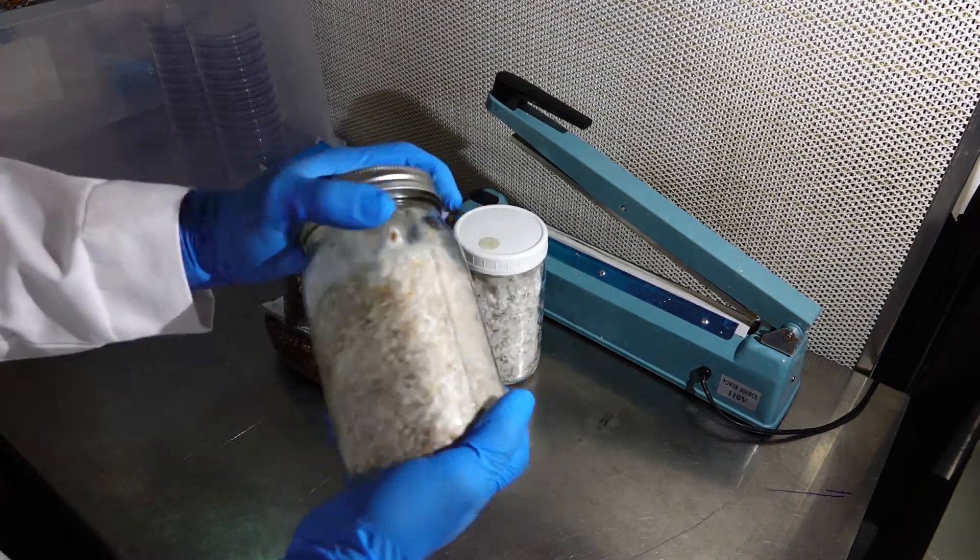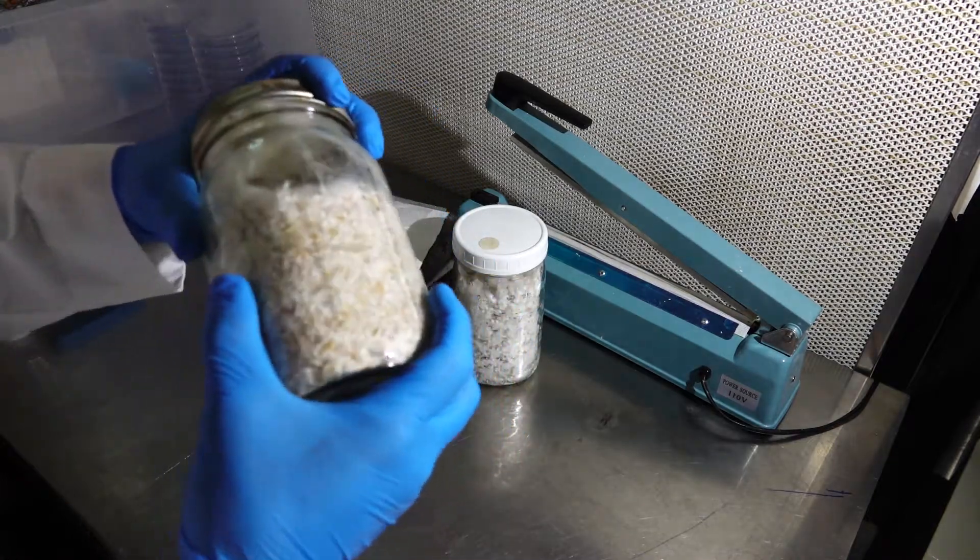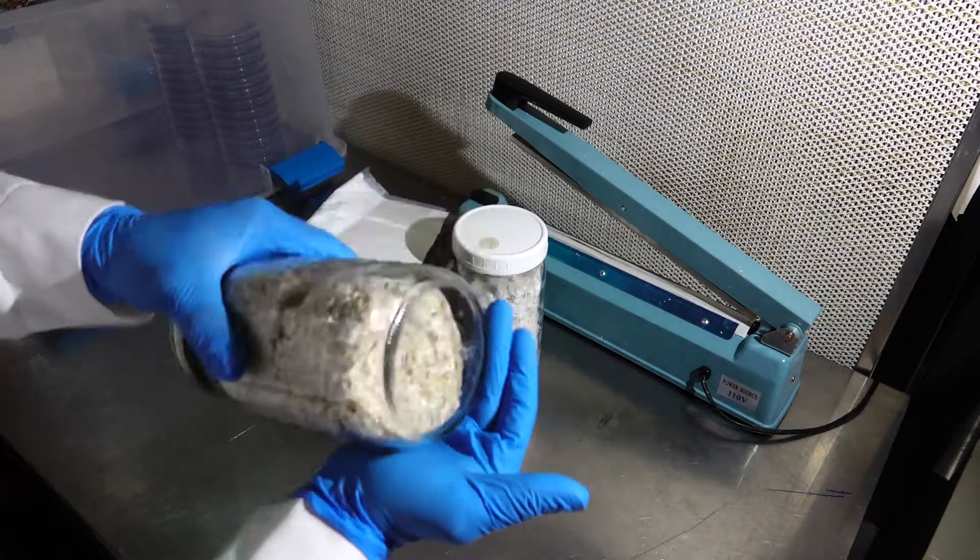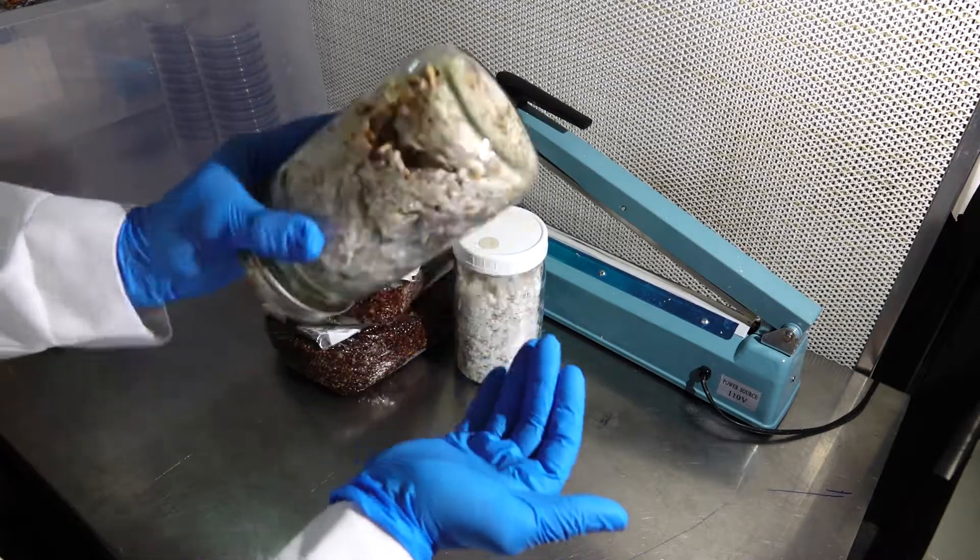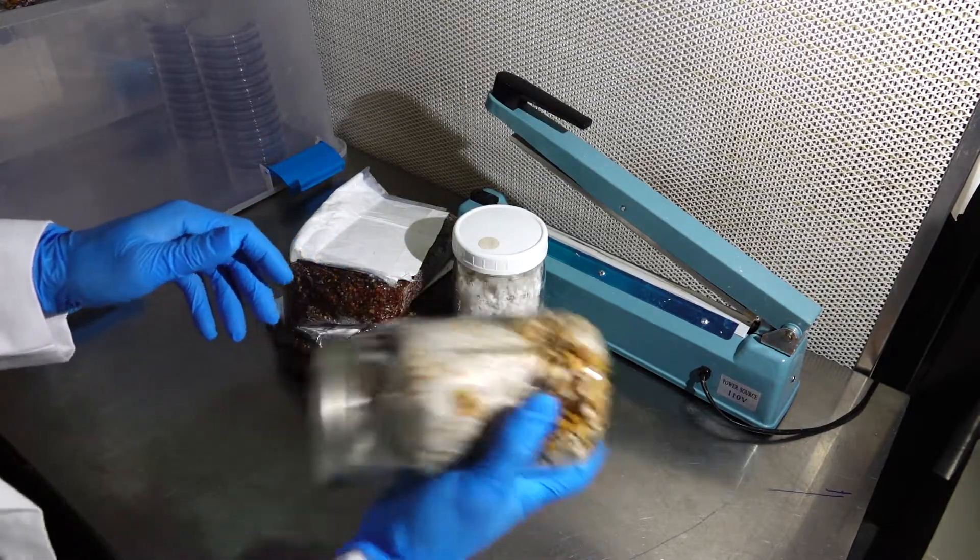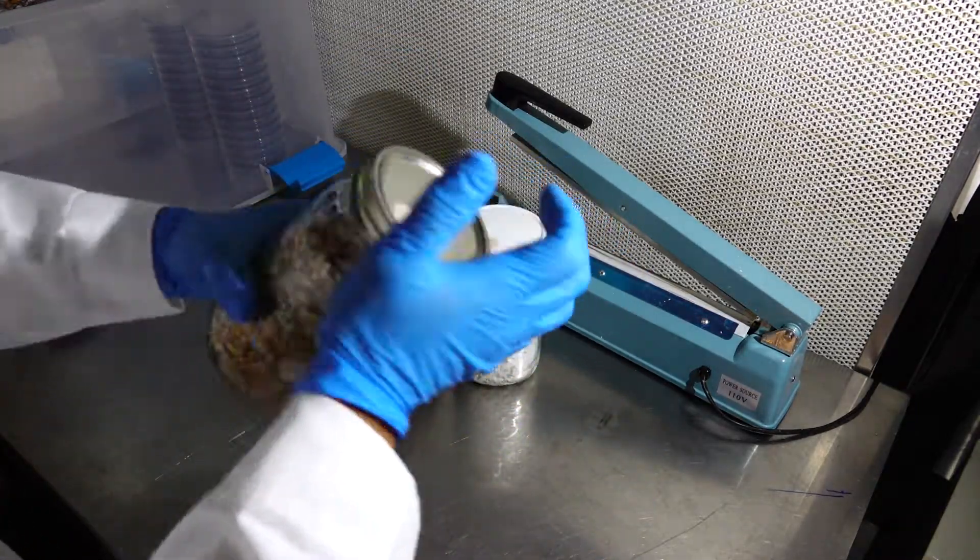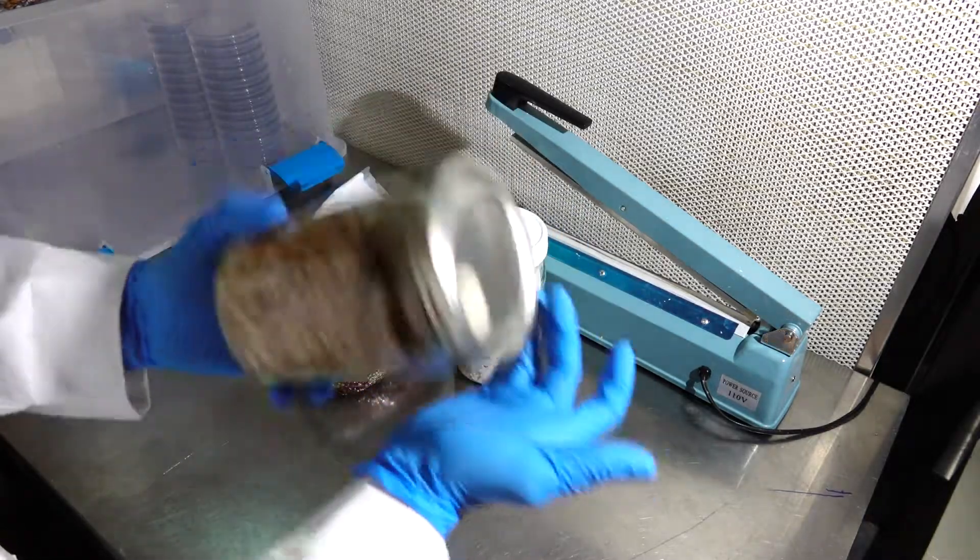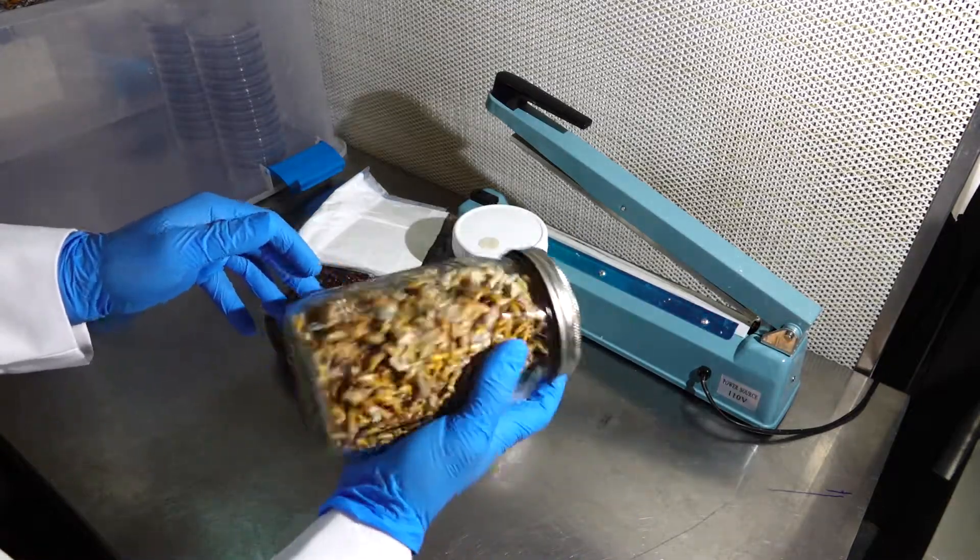The second step is make sure that your vessel doesn't have any cracks, make sure it doesn't have any leaks, make sure that it's sturdy. You're gonna want to take it and break up the mycelium gently. You don't want to break the jar and cut your hand. A couple shakes around the jar should do the trick, loosening up any of the mycelium mass that's stuck to itself.